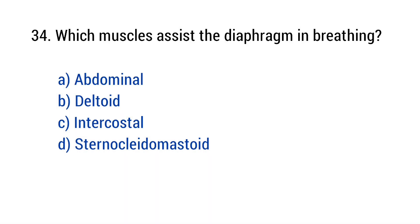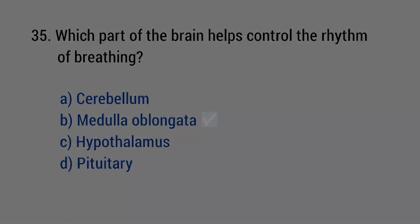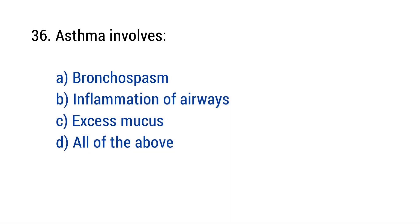Question number thirty-four. Which muscles assist the diaphragm in breathing? Question number thirty-three — which part of the brain helps control the rhythm of breathing? The right answer is option B: medulla oblongata. The right answer is option D: all of the above.